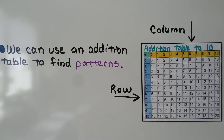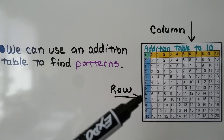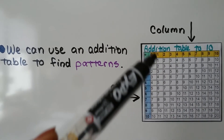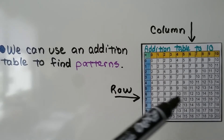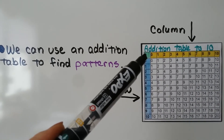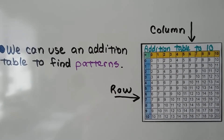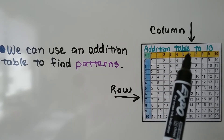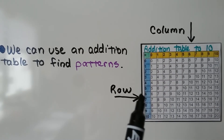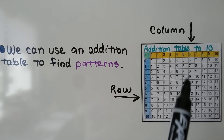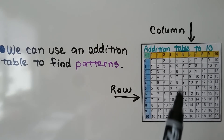We can use an addition table to find patterns. Here we have columns coming down of numbers, and here we have rows going across of numbers. You can see the plus sign right here in the corner. If we add a number from the yellow bar to a number in the blue bar, they'll meet at that column and row.